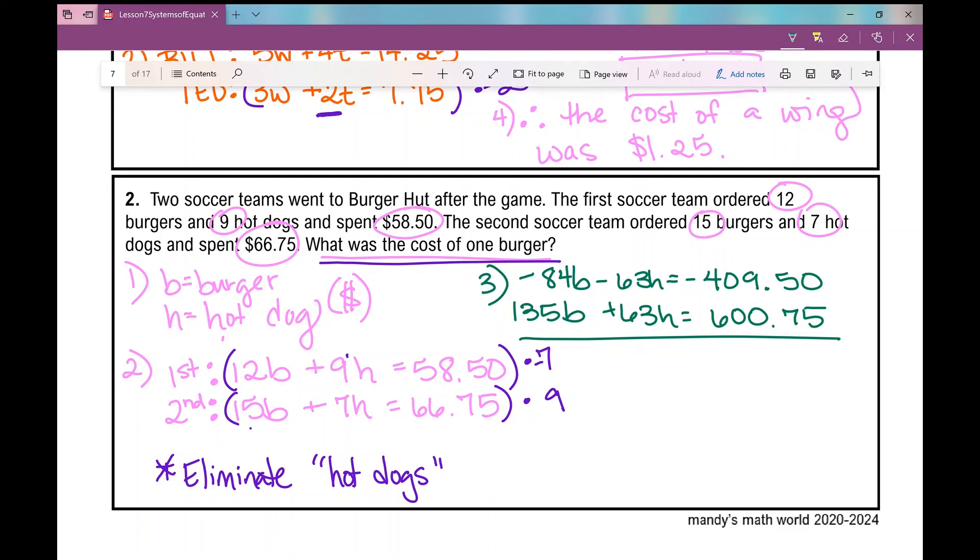So now let's solve the system of equations using elimination. The H's get eliminated. Negative 84 plus 135 is 51. So 51B equals negative 409.5 plus 600.75 equals 191.25. Now let's divide both sides by 51. So 191.25 divided by 51 is 3.75. Which means what? Therefore, the cost of a burger is $3.75.